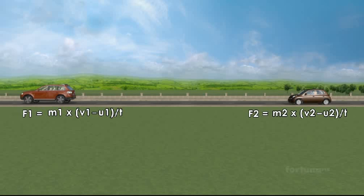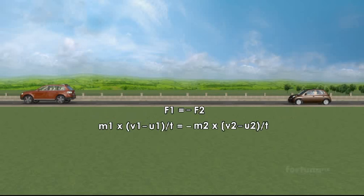According to Newton's third law, each action will have an action that is equal and opposite. Meaning, the forces can be expressed as F1 equals minus F2. Because both forces are equal and opposite, we can also write them as M1 into V1 minus U1 by T equals minus M2 into V2 minus U2 by T.